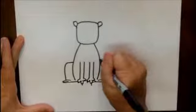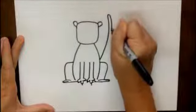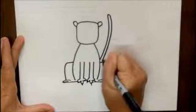For his tail, find a good spot, come out, round it, and then go parallel to that line.